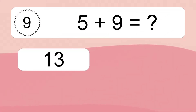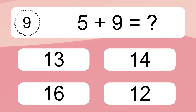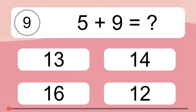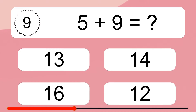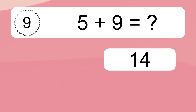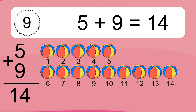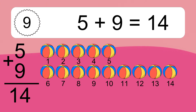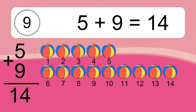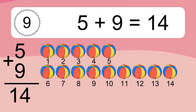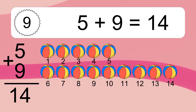5 plus 9 equals what? 5 plus 9 equals 14. Let's count it. 1, 2, 3, 4, 5, 6, 7, 8, 9, 10, 11, 12, 13, 14.